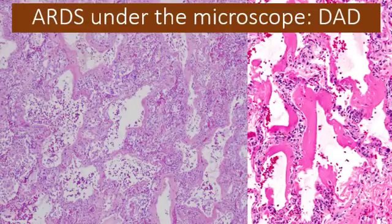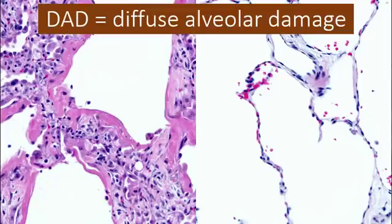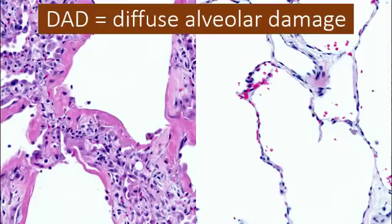This is what ARDS looks like under the microscope. It causes a series of changes that pathologists call diffuse alveolar damage, or DAD. This is not at all what a normal lung looks like. On the left is a lung with diffuse alveolar damage; on the right is a completely normal lung. You can see how thin the walls of the air sacs are in the normal lung — all the white space in between is just air, and the tissue forms the walls of the air sacs.